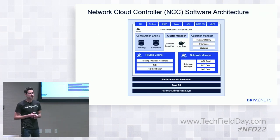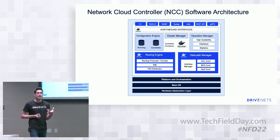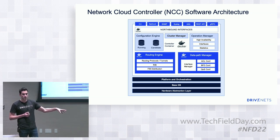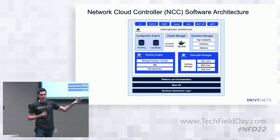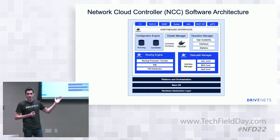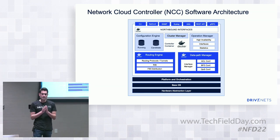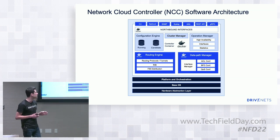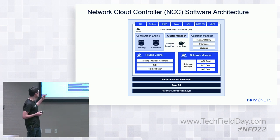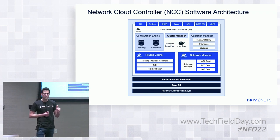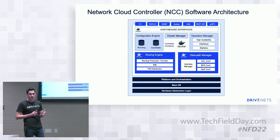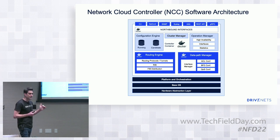So how does the DriveNet Network Operating System look? At the top we have the NCC, the Network Cloud Controller. This controller function can run on a white box in standalone mode, or on an x86 server in a cluster — usually running redundantly in pairs. Think of it as the equivalent of an RP on a Cisco or Juniper router: it handles all control and management mechanisms of the cluster. Northbound interfaces: the CLI — you get one command line interface no matter how many boxes are in play, as if it were a physical chassis.